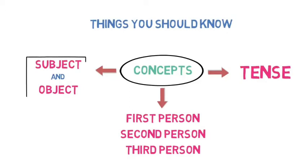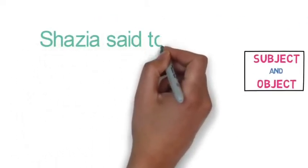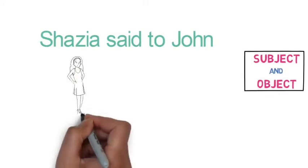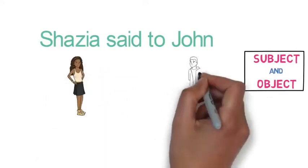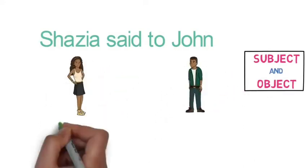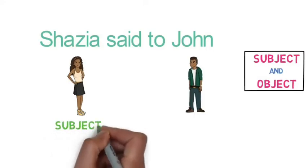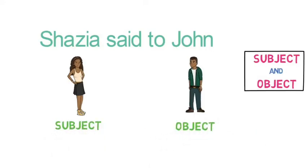What is the subject and object in the sentence? We will understand it with an example. In the sentence 'Sajya said to John,' Sajya is the person doing the action and John is the person receiving the action. The person doing the action is the subject, and the person at the receiving end is the object. Please keep that in mind.